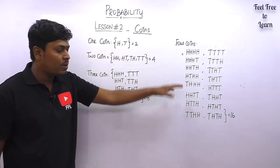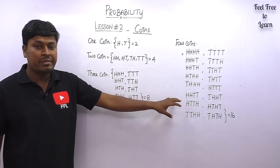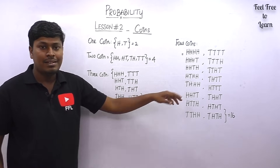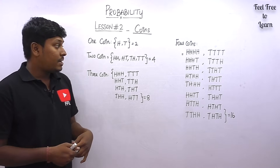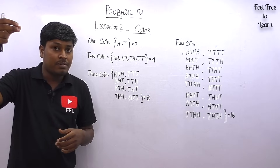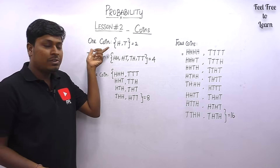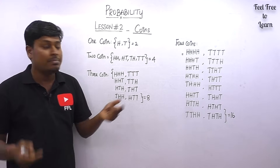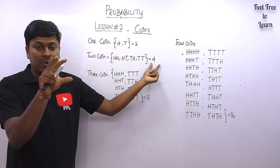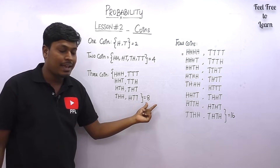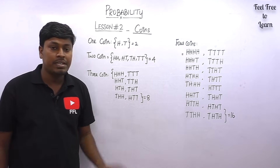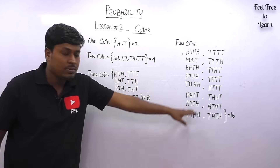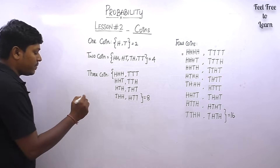You don't need to write out all outcomes every time — once you practice 10 to 15 questions, you'll memorize them automatically. Remember: for one coin the possibility is 2, two coins gives 4, three coins gives 8, four coins gives 16, and five coins gives 32.